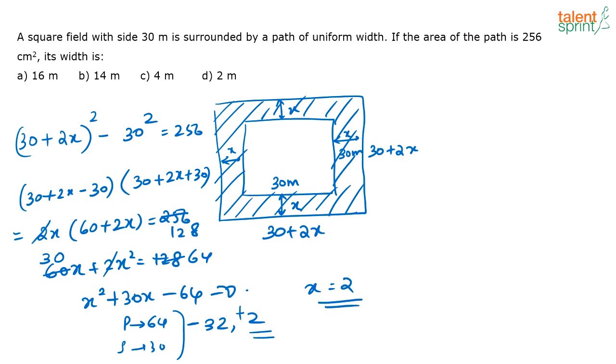See actually you needn't even, one way of doing it is like this. Other way you can actually check out with the options also. If you feel that is a faster way to do it. Correct answer is option D that is 2 meters. So how you go with the options is,